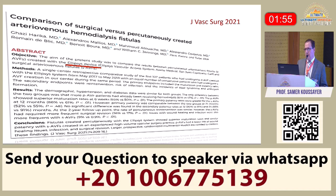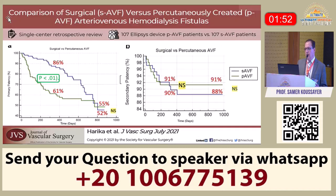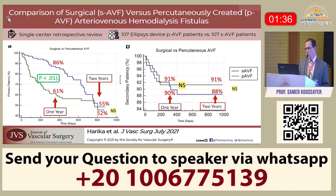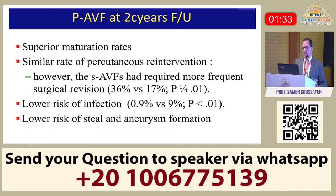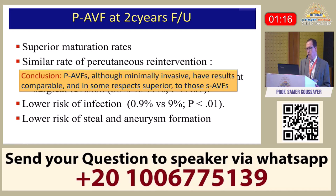Another recent paper compared endovascular with surgical AV fistula in a single-center prospective study with 107 patients in each group. Primary patency at one year was better for the surgical group, but at two years there was no difference. Secondary patency at one and two years was similar between both groups. The endovascular group showed superior maturation rate and similar intervention rates, but the surgical group required more frequent surgical revisions. Endovascular AV fistula also had a lower risk of infection, steal syndrome, and aneurysmal formation, with results comparable and sometimes superior to surgical AV fistula.